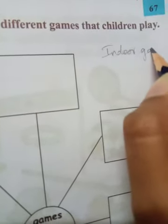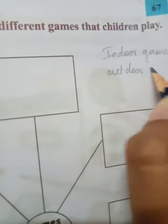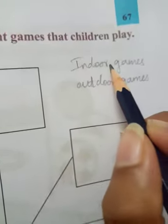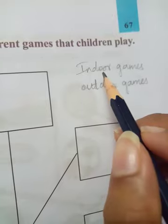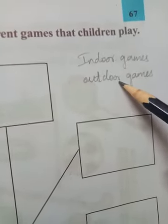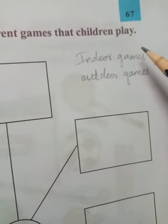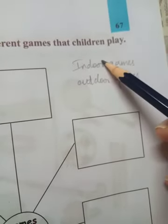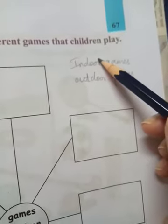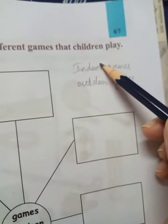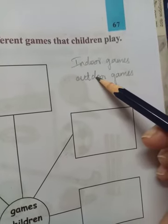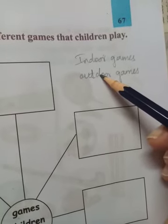Games are of two types: indoor games and outdoor games. Indoor games are the games which we play inside our house - like carrom, chess, ludo. Outdoor games are the games which we play outside the house - like cricket, volleyball, football. Everything you play outside comes under outdoor games.